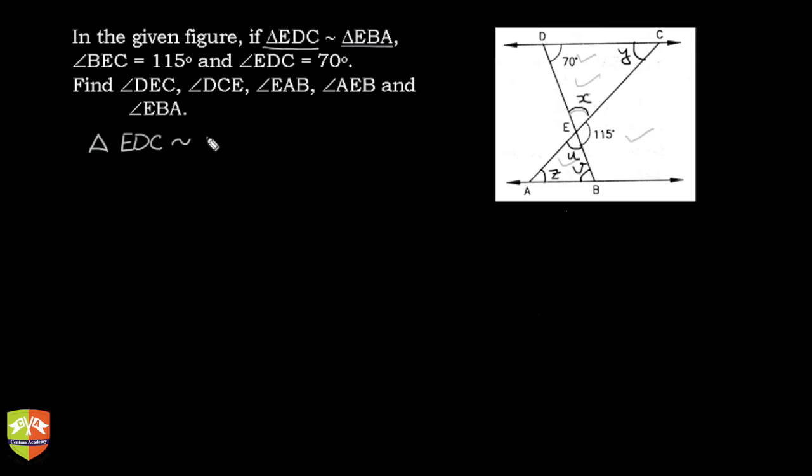Triangle EDC is similar to triangle EBA. This is given, so corresponding angles will be equal. Angle E is angle E anyway, so angle D is going to be equal to angle B.